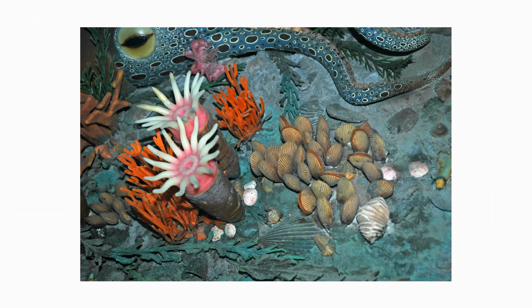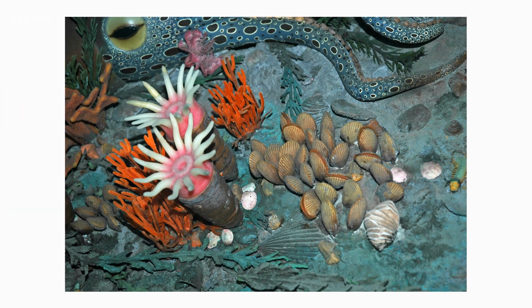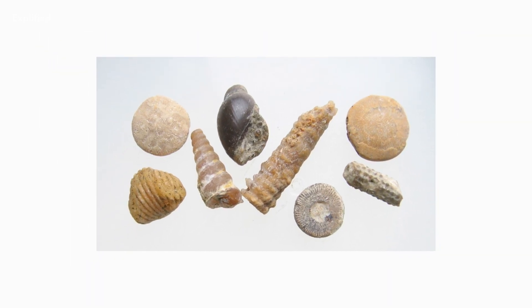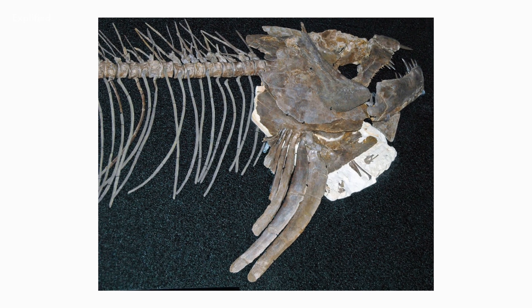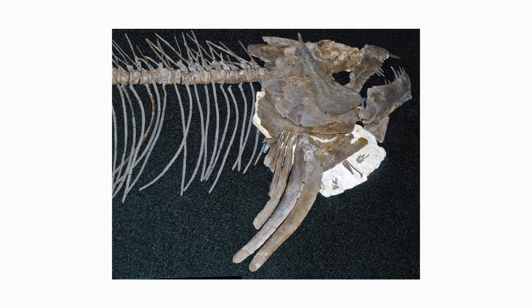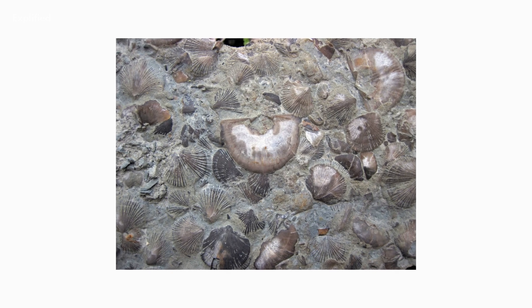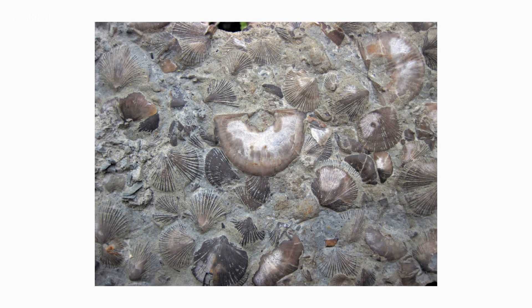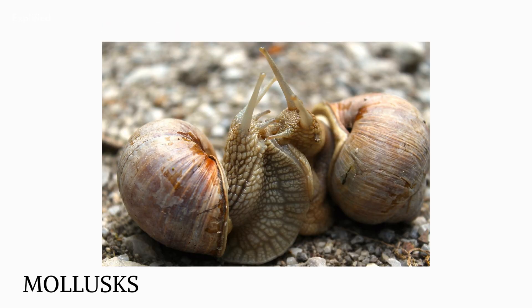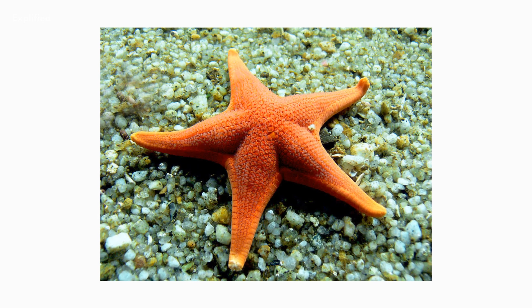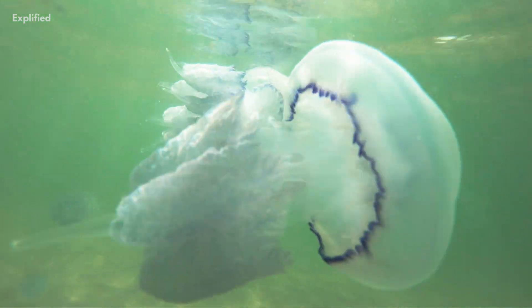By the conclusion of the era, practically every contemporary phylum — a collection of creatures with similar body plans — of marine invertebrates had appeared, as well as the development of fish. Brachiopods (lamp shells), bryozoans (also known as moss creatures), trilobites, mollusks, echinoderms (a type of spiny-skinned marine invertebrates), and graptolites were among the invertebrates that dominated Ordovician seas.